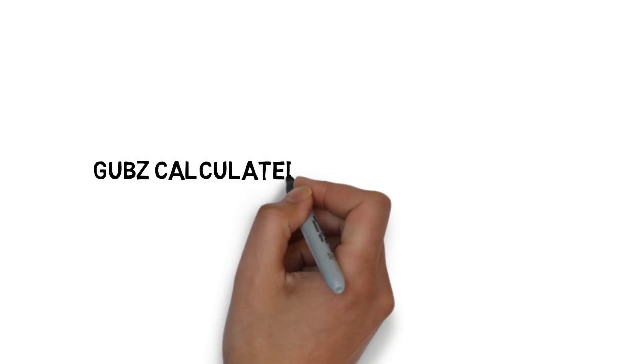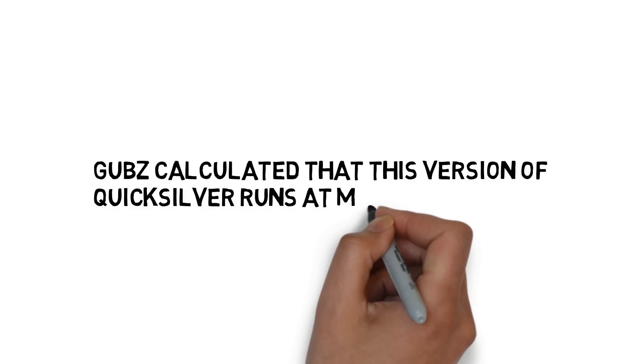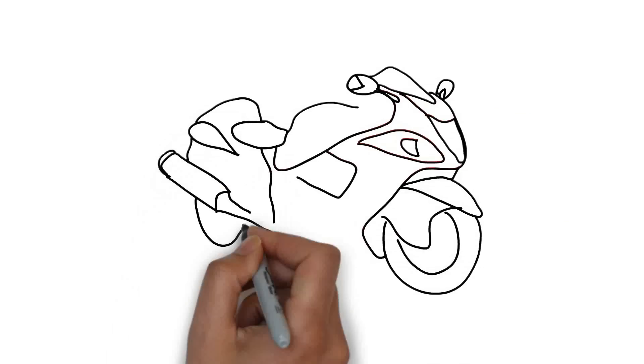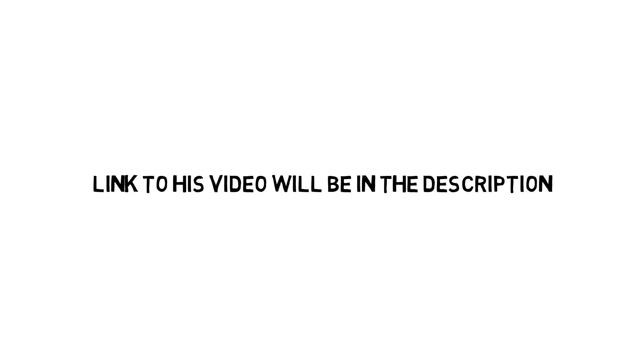So now that I've wasted enough time, Gubbs calculated that this version of Quicksilver can run up to Mach 4. And Gubbs also used the Pythagorean theorem as well as the velocity formula in order to solve for Quicksilver speed. The link to his video will be in the description below.